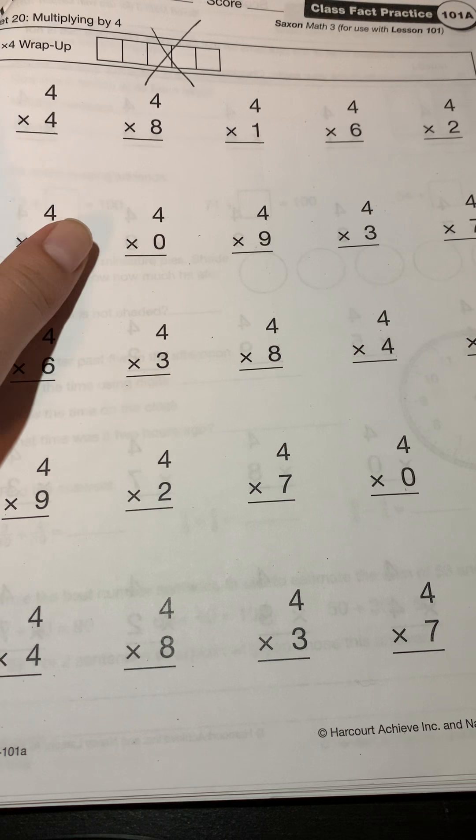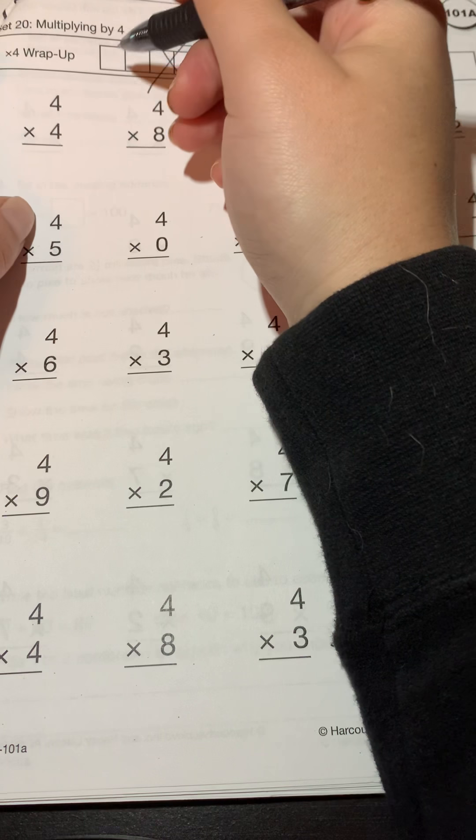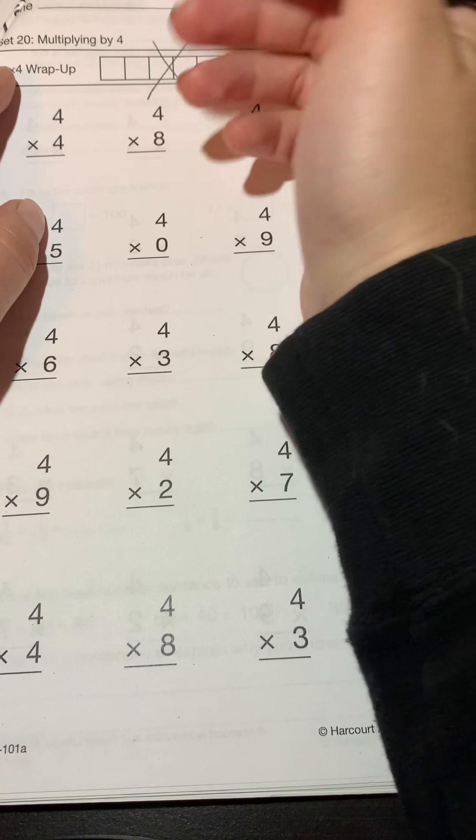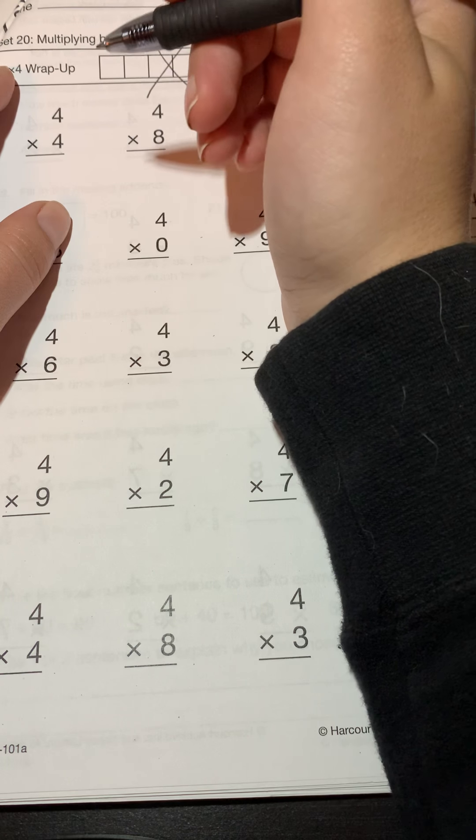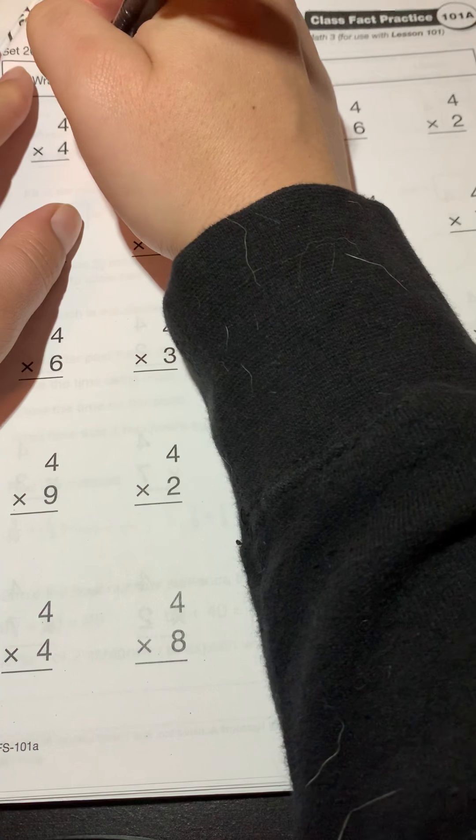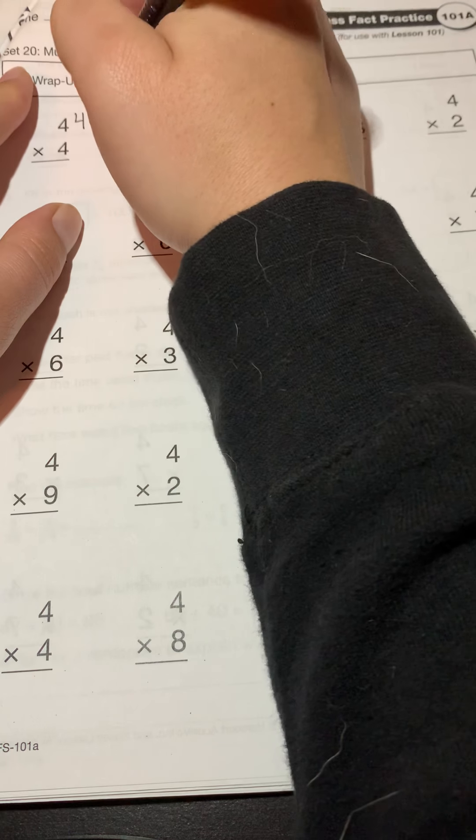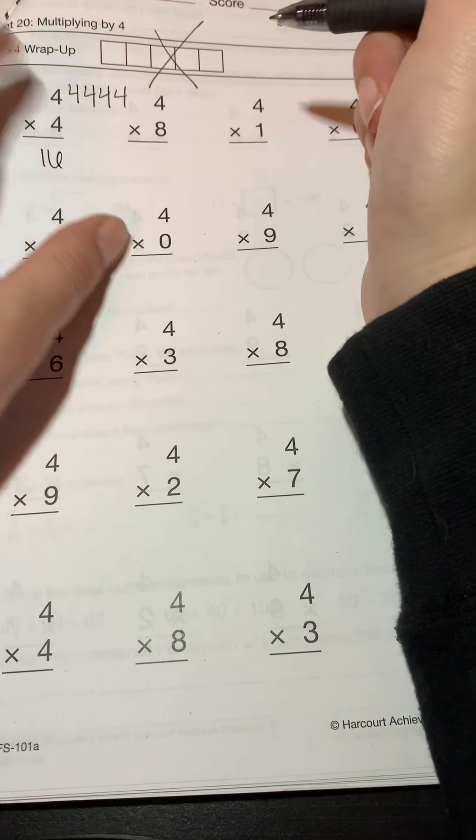We'll go over a couple just to remind you what multiplication is. So we have 4 times 4 - we're gonna count by four, four times, and whatever number we get to is our answer. So I have 4, 8, 12, 16. Sixteen is my answer.